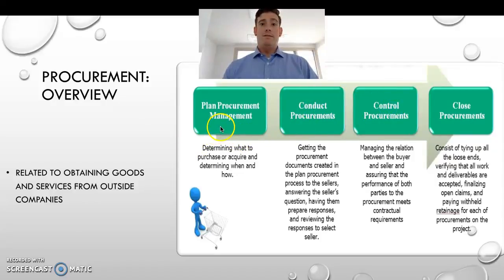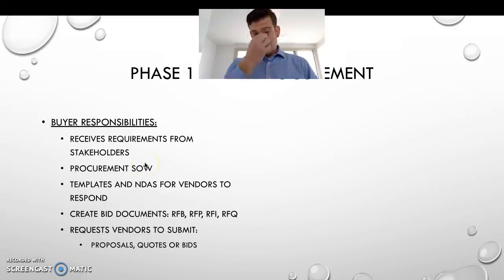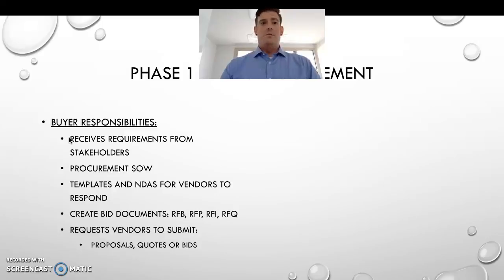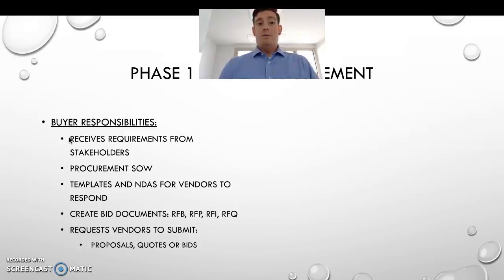Phase one: plan procurement. The buyer is the one with all the responsibilities in this phase. They have to receive requirements from stakeholders to know what they're going to be doing. They need to create a procurement statement of work and prepare templates and NDAs for the vendors to respond to.